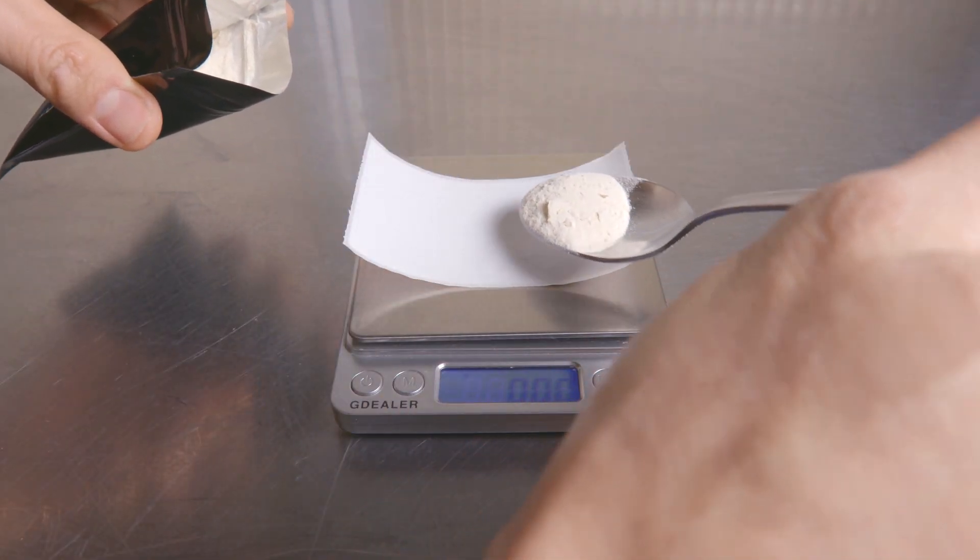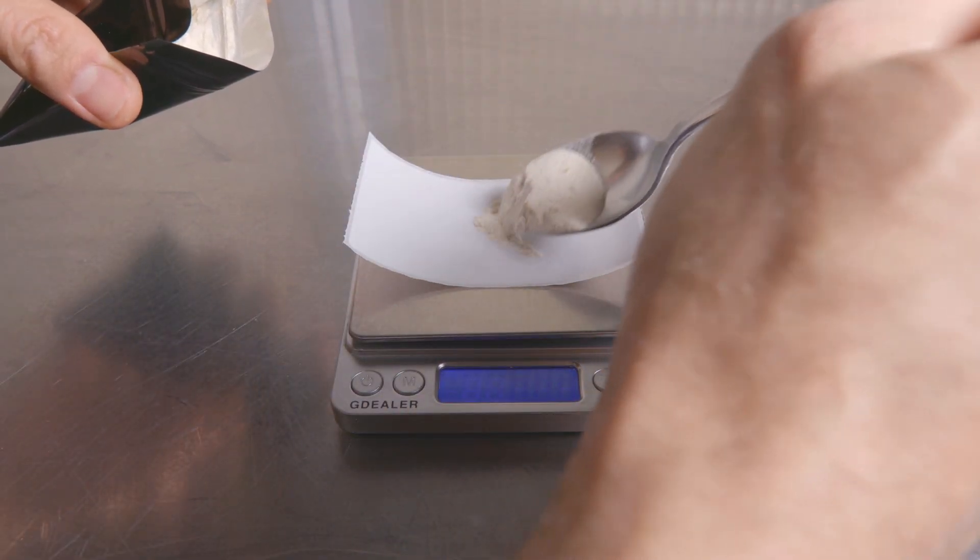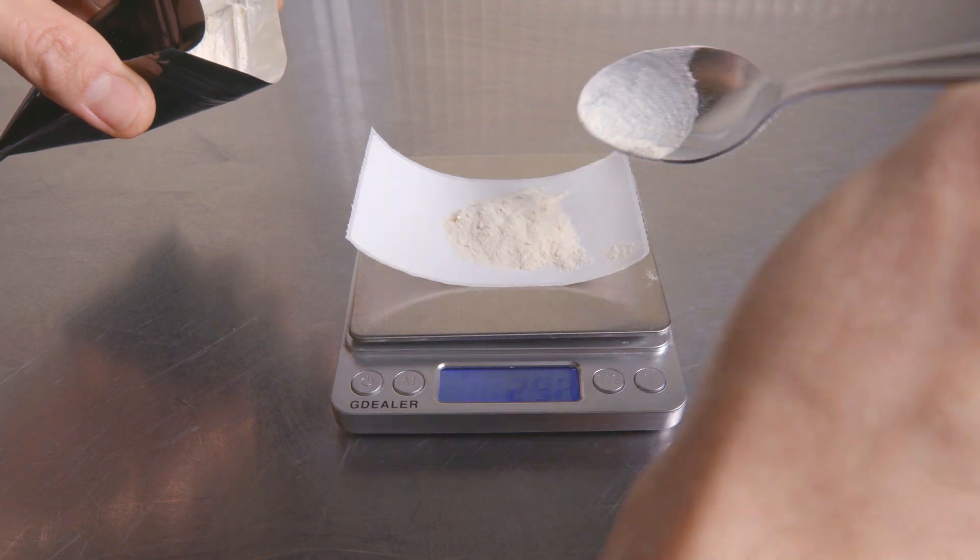The first thing you're going to want to do is measure out your ingredients. We're using the pre-mixed agar media that we offer in our shop, so if you don't want to fuss with making your own, pick some up at FreshCultivators.com.